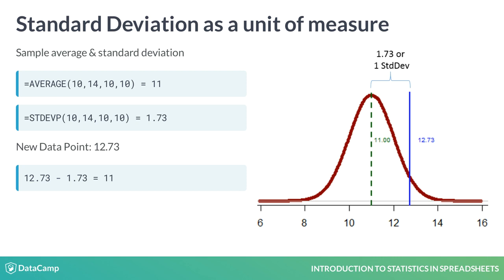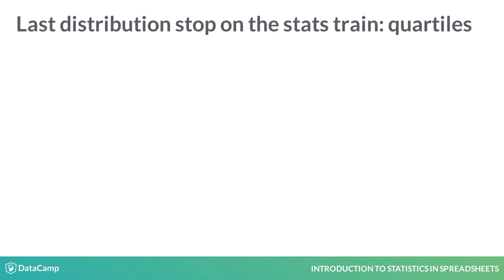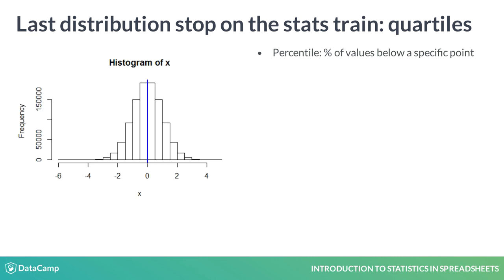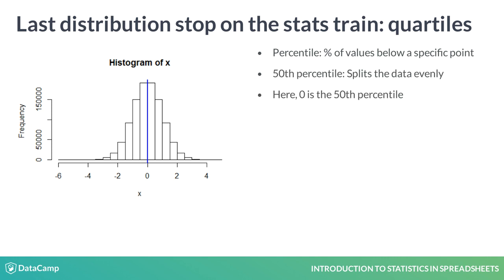Another statistic for understanding a distribution is a percentile. Ordering a distribution and calculating the percentage of values below a specific point will tell you its percentile. This histogram visualizes one million values. The blue line average at zero is the 50th percentile because it splits the data evenly — half the points are less than zero and half are greater.